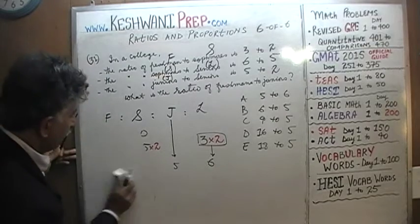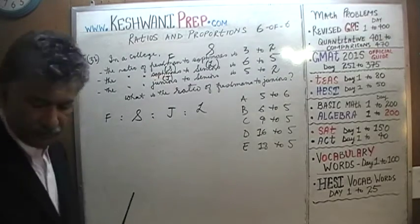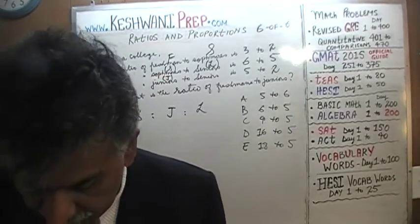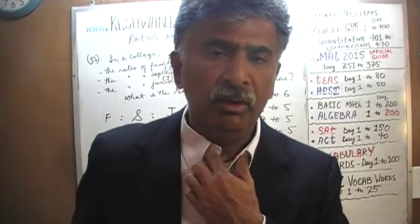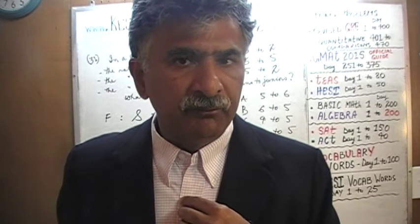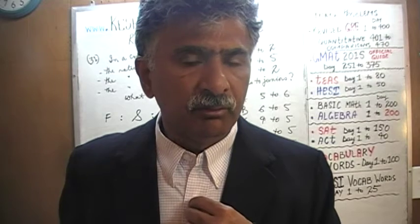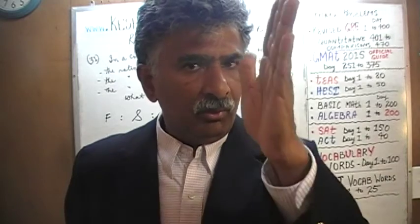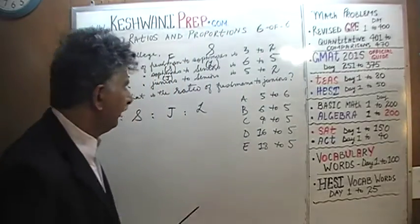Everything is already set up — all we have to do is plug in numbers. But pay attention: the numbers in each category have to be consistent. They cannot change from one part of the story to the next. If you tell me there are 12 red marbles in the bag, that must remain 12 red marbles — it cannot suddenly become 6 or 13 or 14. Same number throughout all parts of the story.